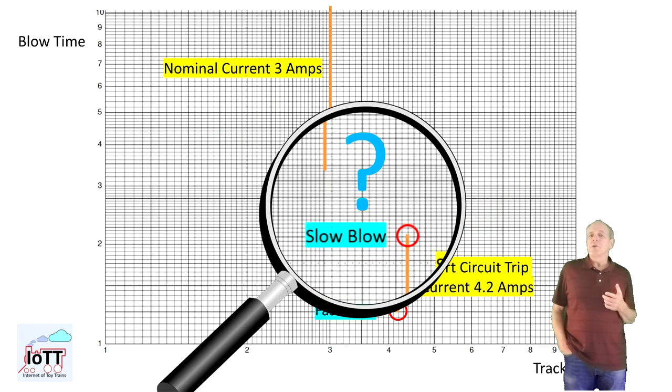Now, like with the real fuse, the interesting range of course is between nominal current and trip current value, so the range where there is a moderate overload of the booster, but not a short circuit. Think about a heavy train climbing a grade for example. In this range, the fuse will eventually blow, but the time it takes depends on the current.